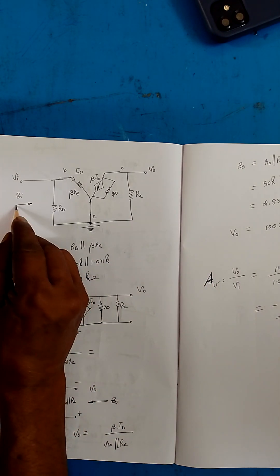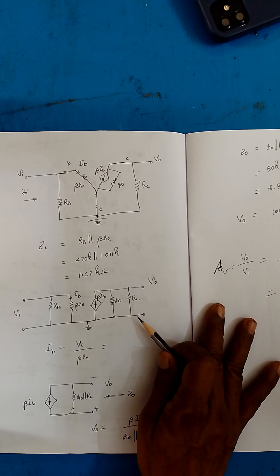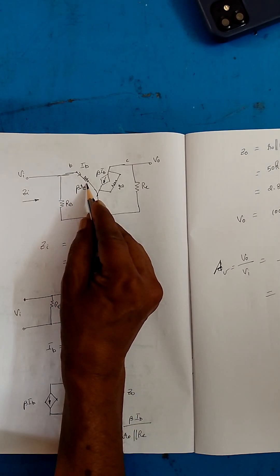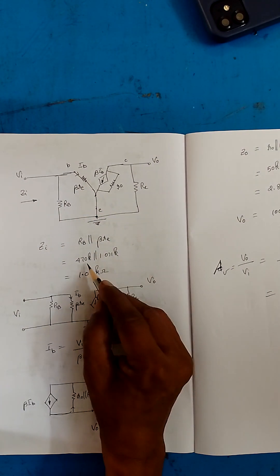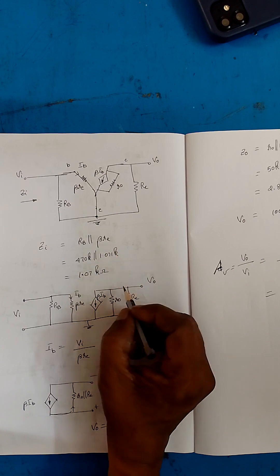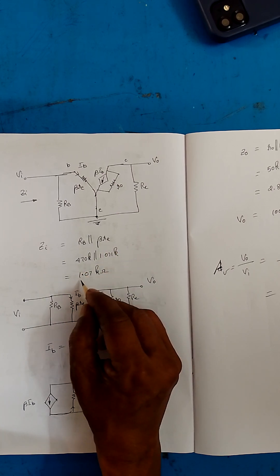Now Z in we are viewing from here. So that is RB in parallel with beta re. RB we know is 470k. Beta re we just found out. Both are in parallel, so roughly the value is going to be 1.07 kilo ohm.